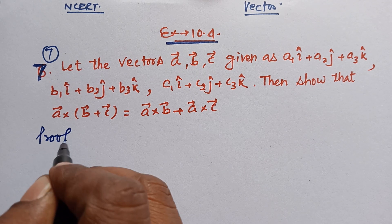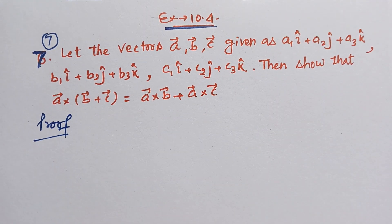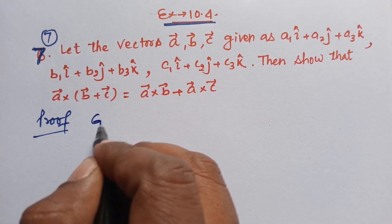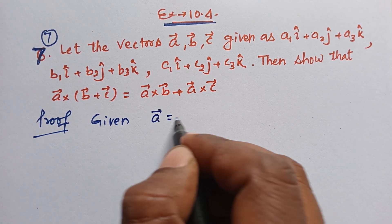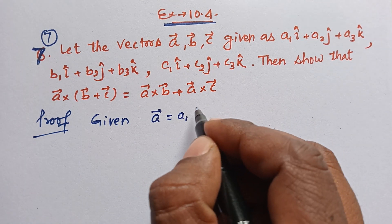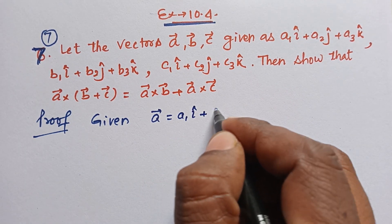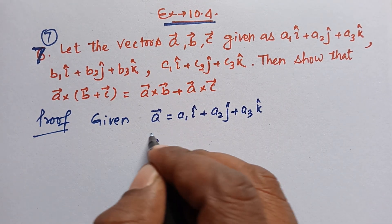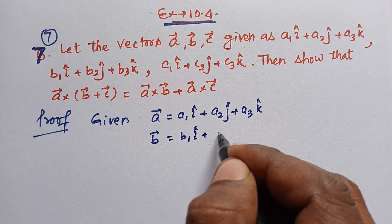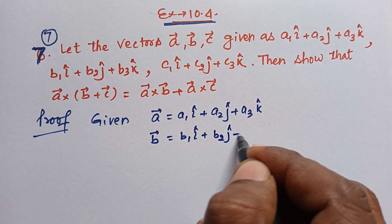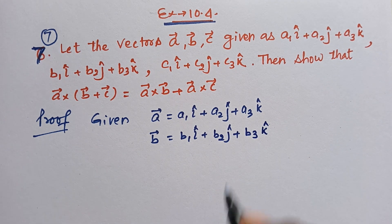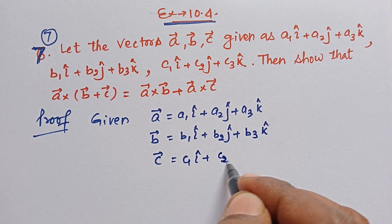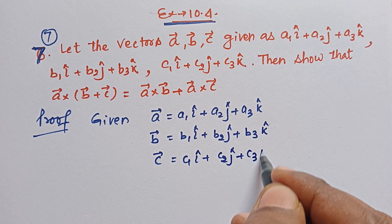So we will prove this, it's quite easy. First, let's write what is given. Given vector A equals a1î plus a2ĵ plus a3k̂. B equals b1î plus b2ĵ plus b3k̂. And C equals c1î plus c2ĵ plus c3k̂.